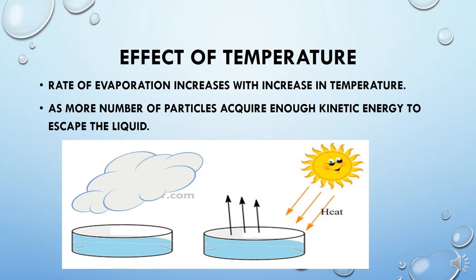Next is the effect of temperature. Heat from the sun increases the rate of evaporation because heat increases the kinetic energy of the particles. As discussed, kinetic energy of particles increases with increase in temperature, so more and more particles will escape the surface of the liquid. Hence, rate of evaporation increases with increase in temperature. As you can see, one vessel of water is kept in sunlight and another in a closed room — the rate of evaporation is faster in the vessel kept in sunlight.